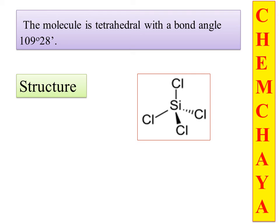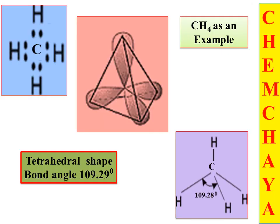This is the way you can explain sp3 hybridization, taking silicon tetrachloride as an example. First, sp3 hybridization gives four sp3 hybrid orbitals. Next, these hybrid orbitals combine with the p-atomic orbitals of four chlorine atoms in SiCl4. The structure is tetrahedral; bond angle and bond length are all exactly the same, giving a regular tetrahedral structure.